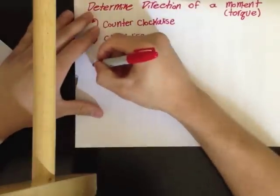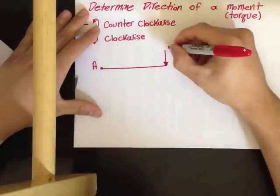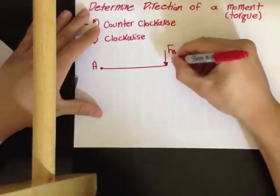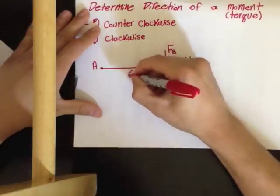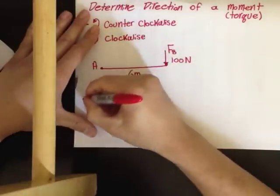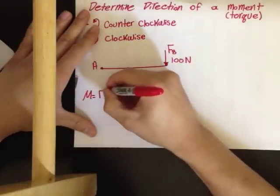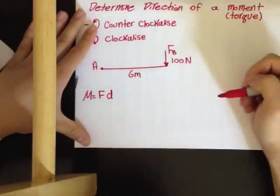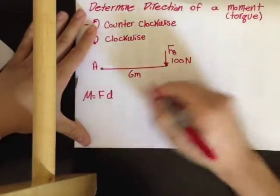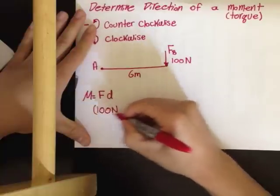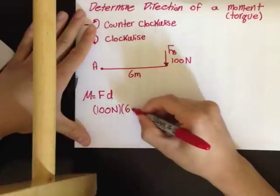Let's say we are taking the moment about point A due to force B, and force B is 100 newtons, and this distance is 6 meters. As you know, moment is force times distance. So for this situation, our force is 100 newtons and our distance is 6 meters.